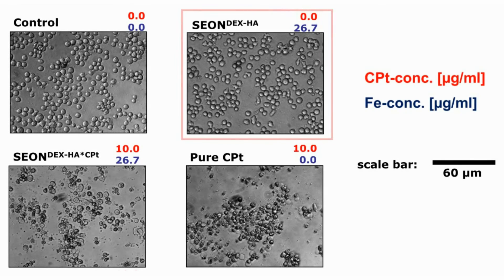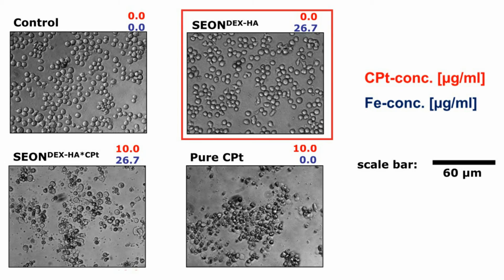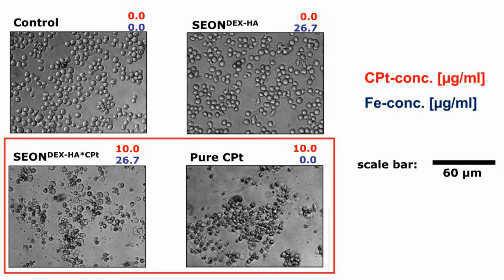In light microscopy images, the cells which were treated with particles without drug show morphology comparable to the negative control, whereas particle-bound cisplatin and pure cisplatin cause shedding of the cell membrane.